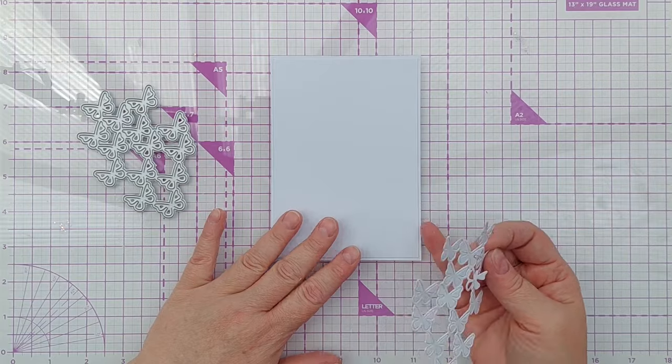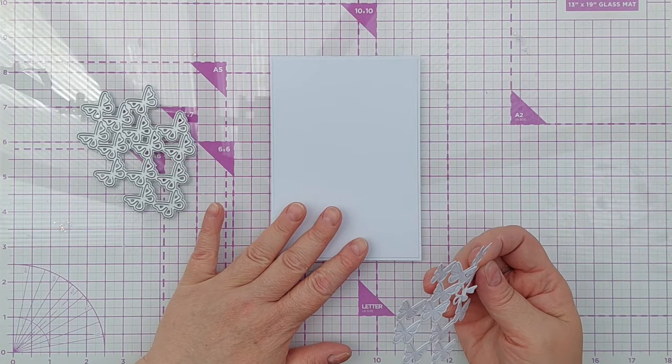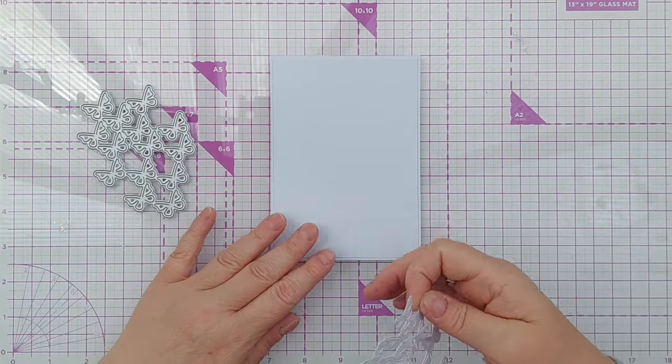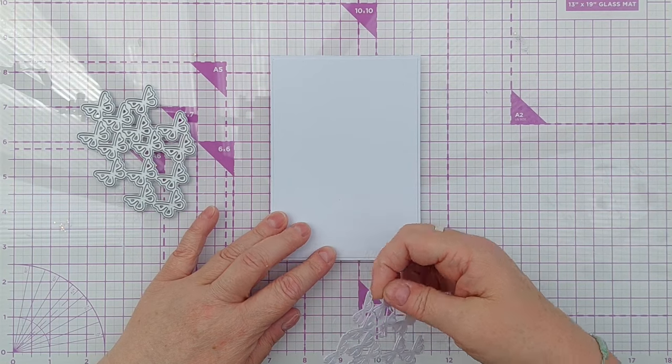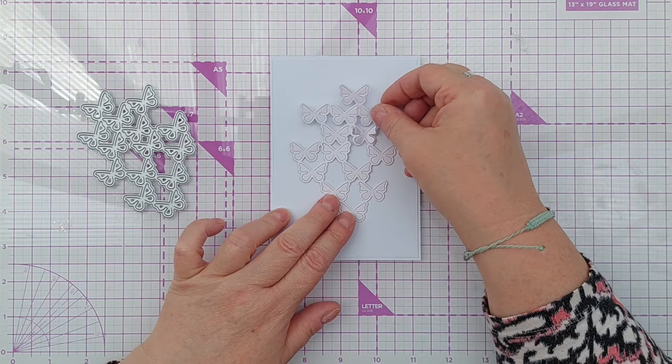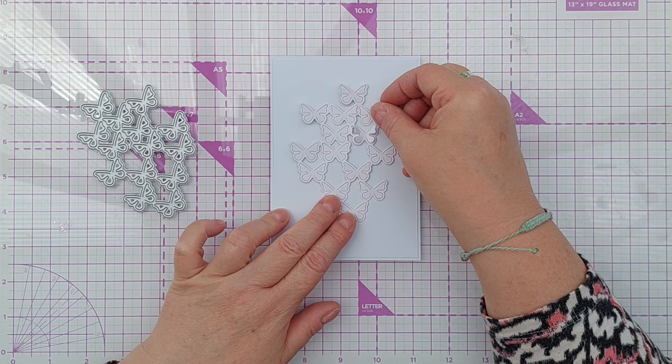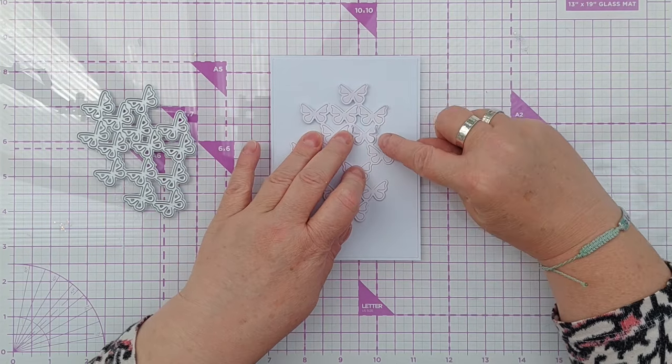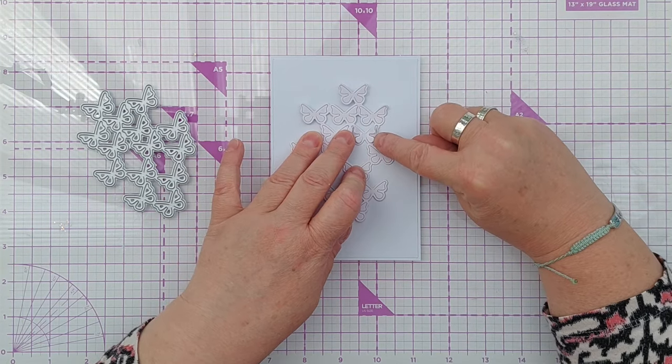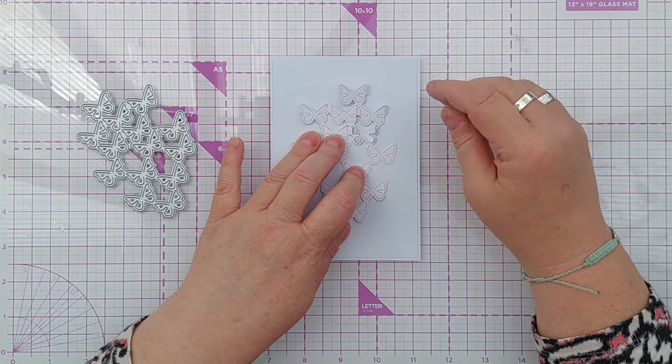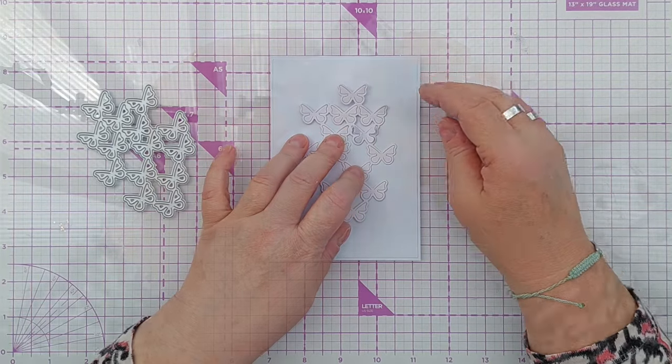So my idea is to take this 4 by 6 inch card blank with a panel of white cardstock already stuck on the front and my butterfly net in the middle there somewhere, but have some color just behind the wings so that when you look at it from various angles you can see some lovely color there.